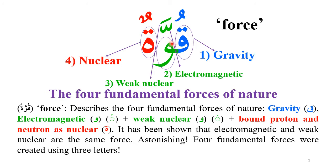The Waw has a Shadda, which means repetition or doubling, and then the Ta Marbuta. The Qaf means gravity, the Waw has two meanings — the electromagnetic and the weak nuclear force — and the Ta Marbuta represents the nuclear force, because the proton and neutron are bound in the nucleus. The Shadda is a representation of the electromagnetic force, whereas the Fatha represents the weak nuclear force.